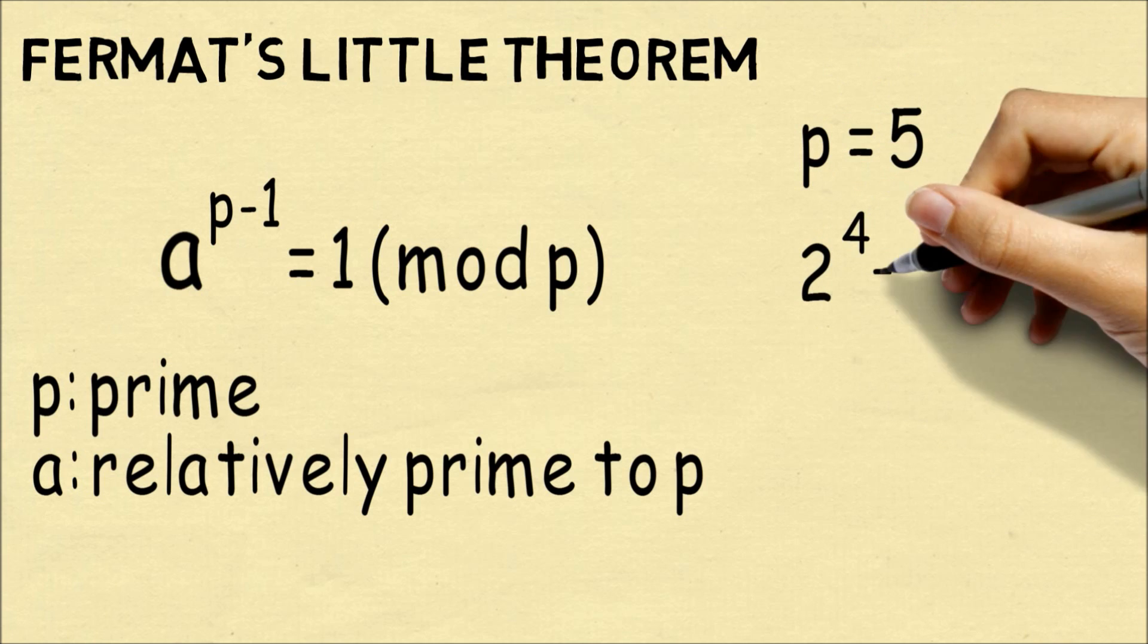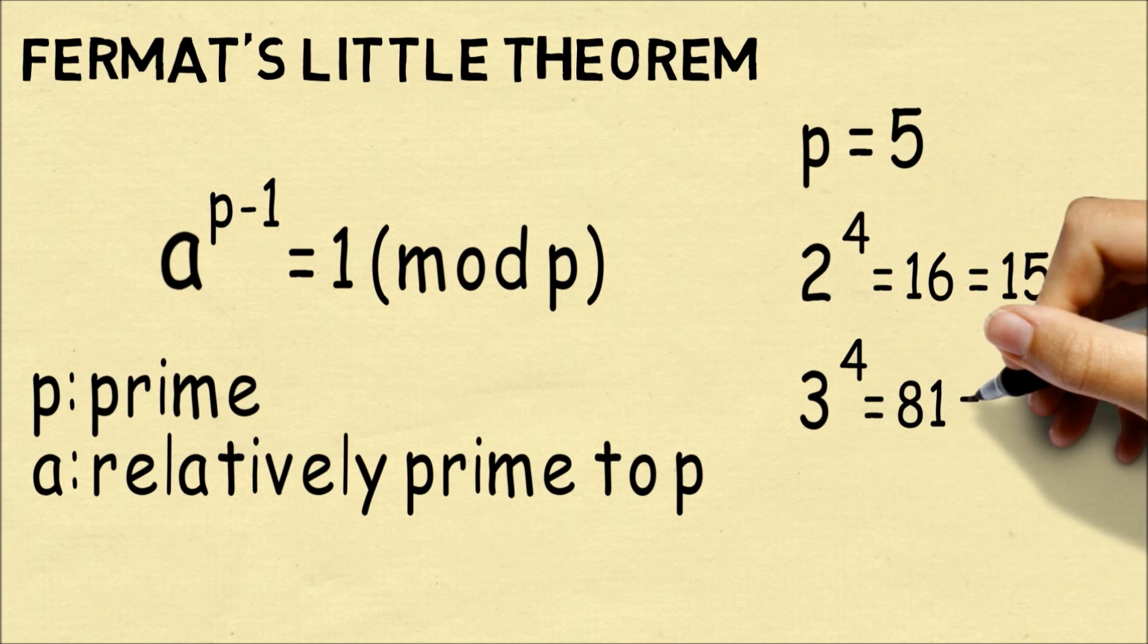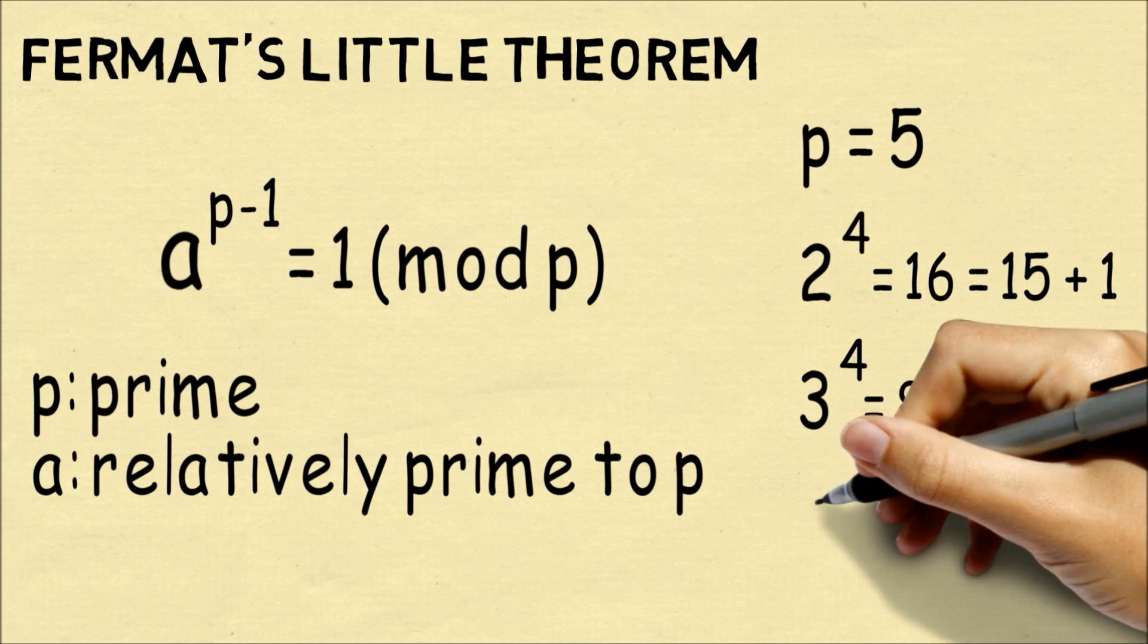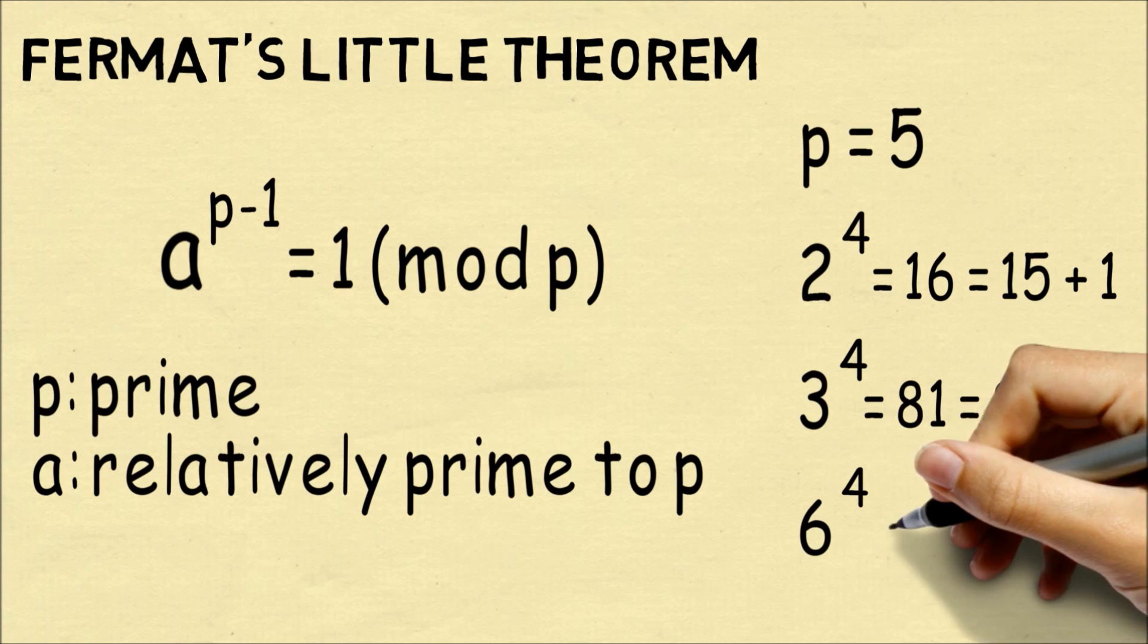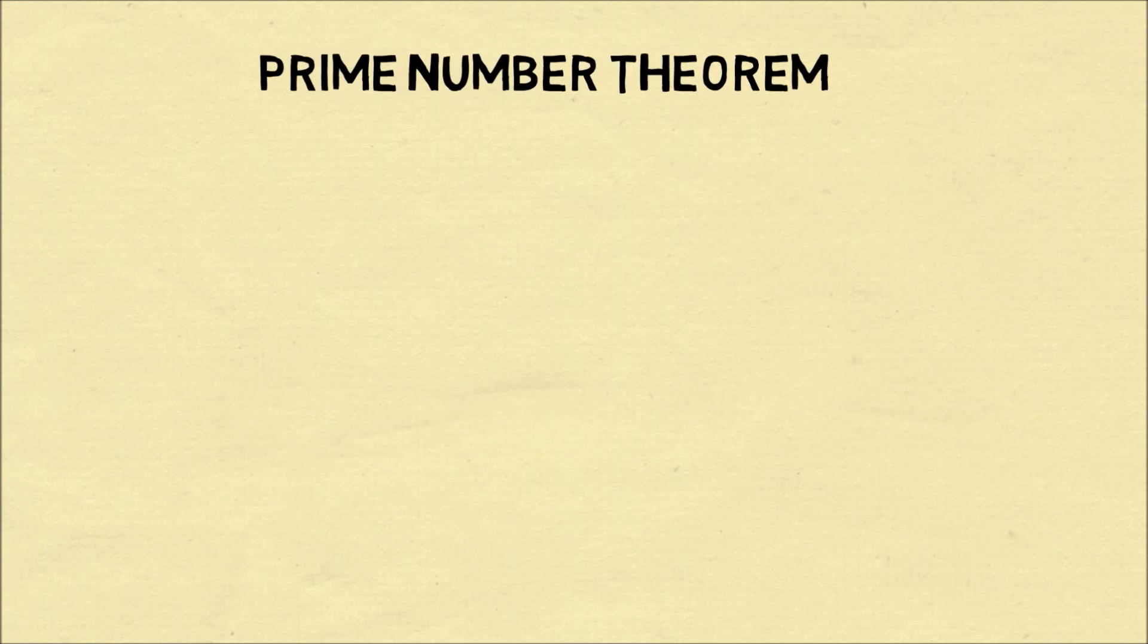So we can do an example. Let's take the prime 5 as p. If we take any number that's relatively prime to 5, we'll find that raising that number to the fourth power will always leave a remainder of 1 when divided by 5. So it's 1 more than a multiple of 5.